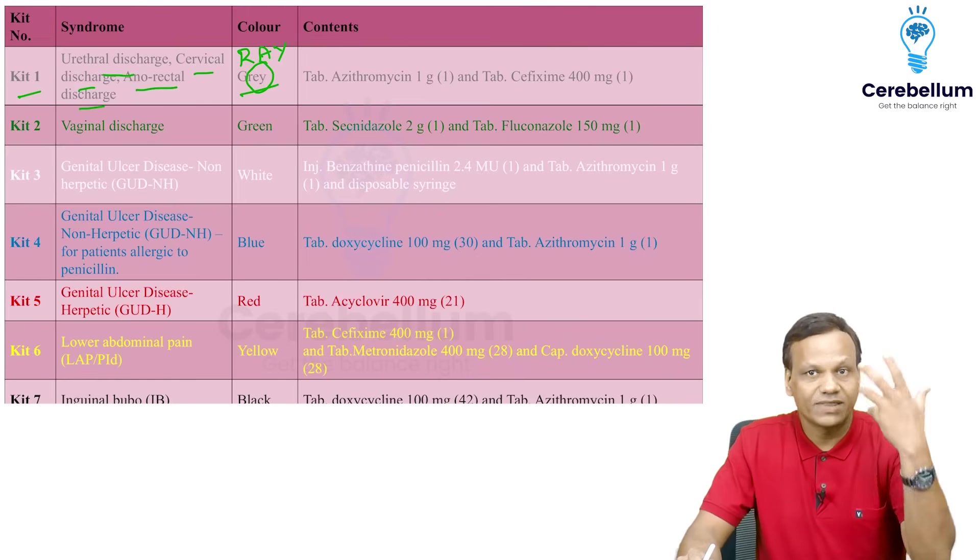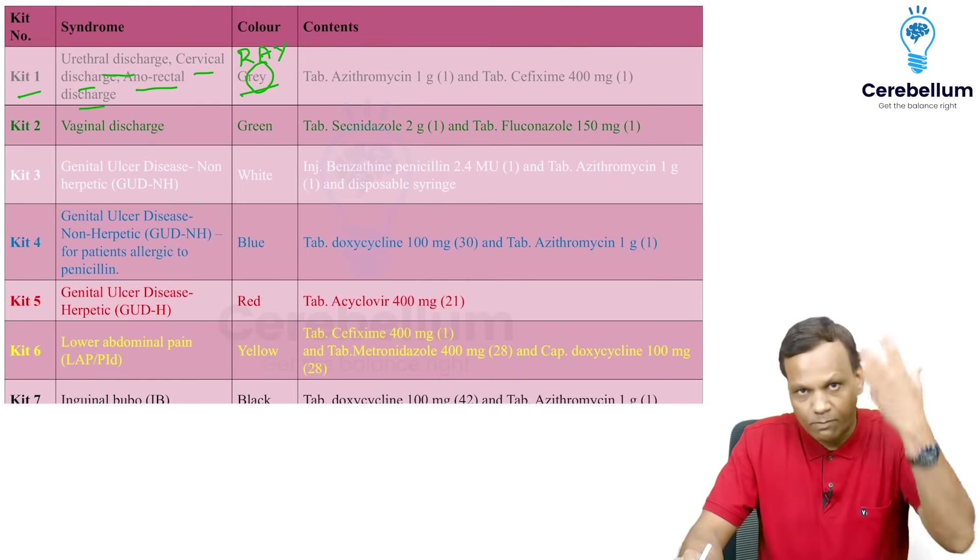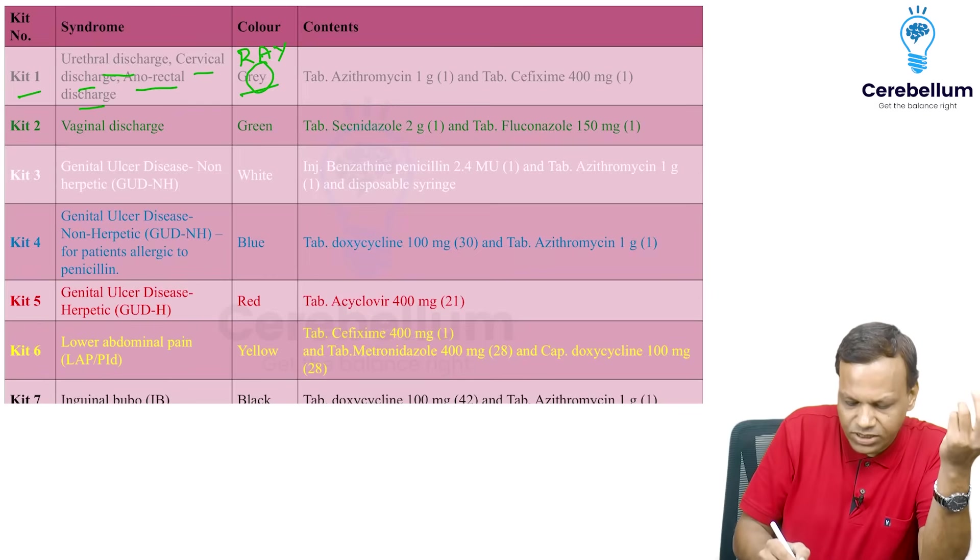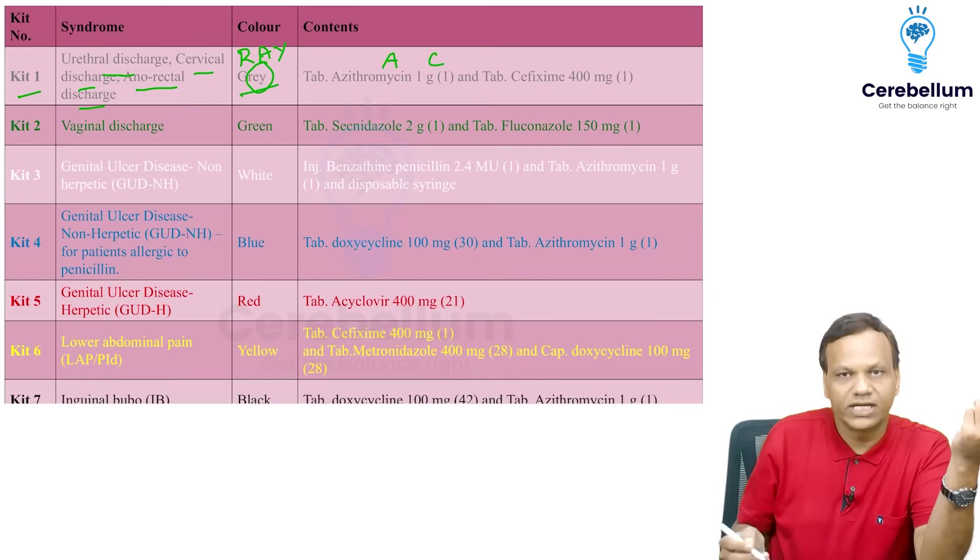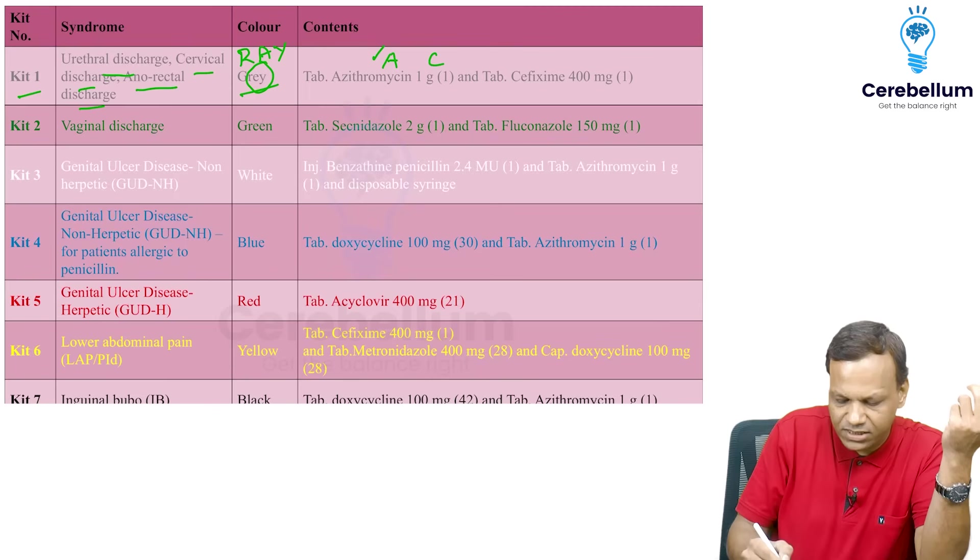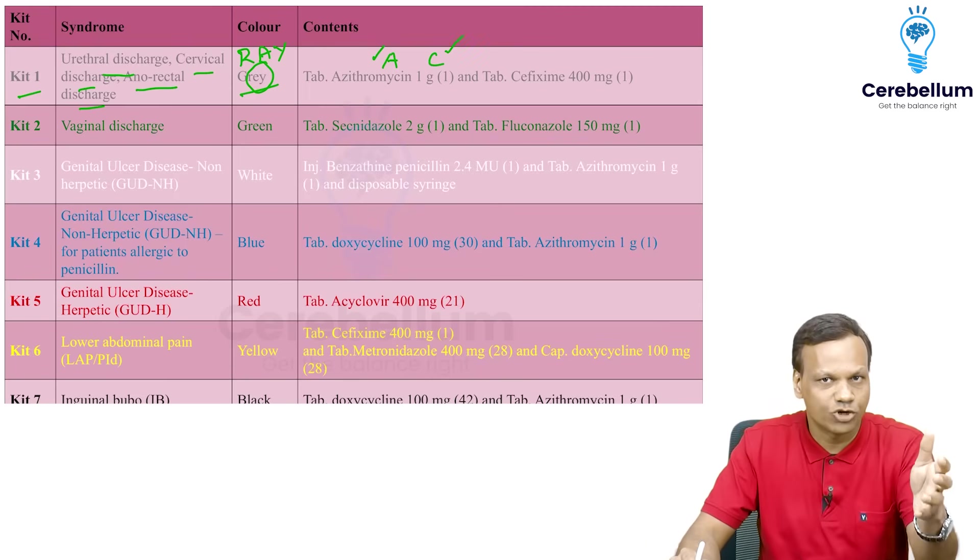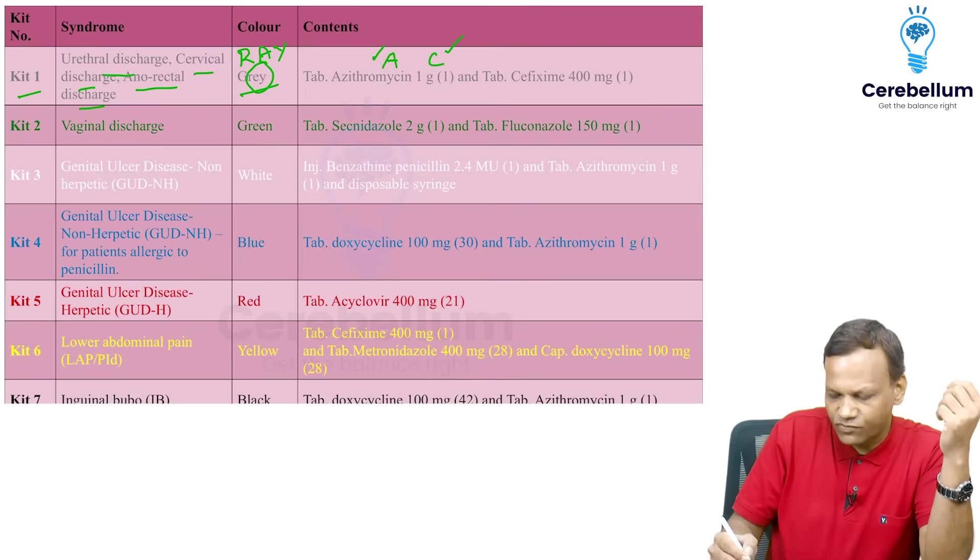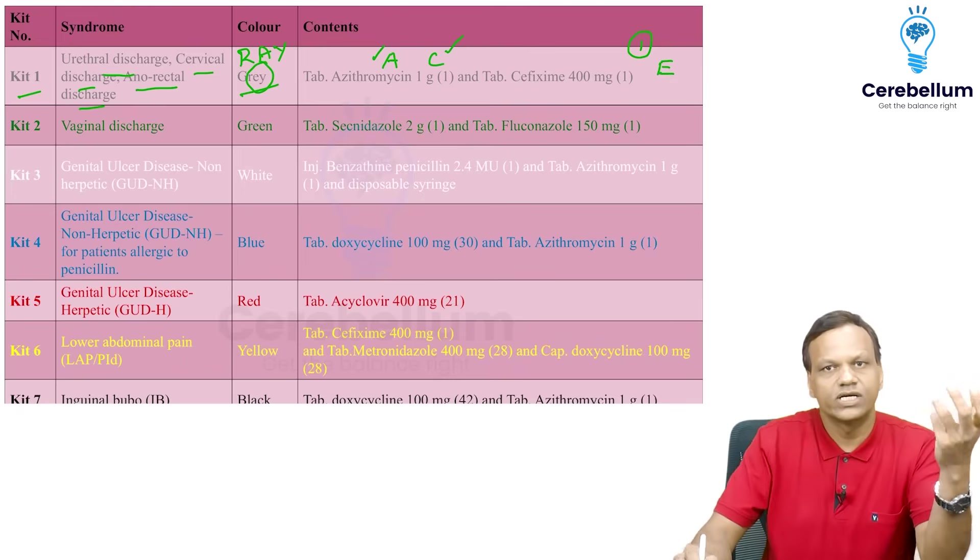And how to stop that sweating? You will need to sit in AC. So it contains A for azithromycin, C for cefixime. So kit content is azithromycin and cefixime. And gray contains one E, so it is kit 1. Only one E is there, so it is kit 1.